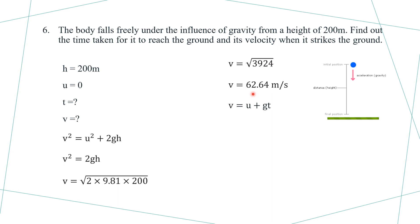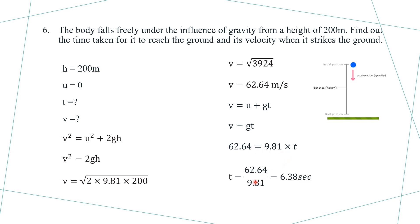To calculate time, using v equals u plus gt, since u equals 0, v equals gt. Therefore 62.64 equals 9.81 into t. So t equals 62.64 divided by 9.81, which gives the time taken by the body to reach the ground.